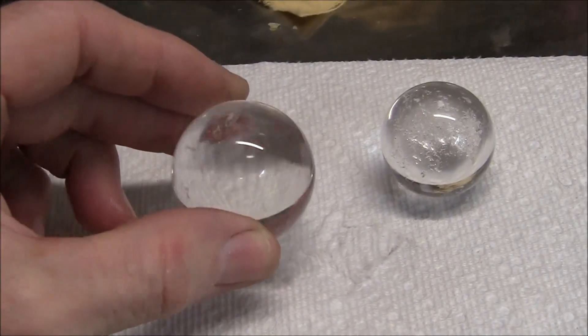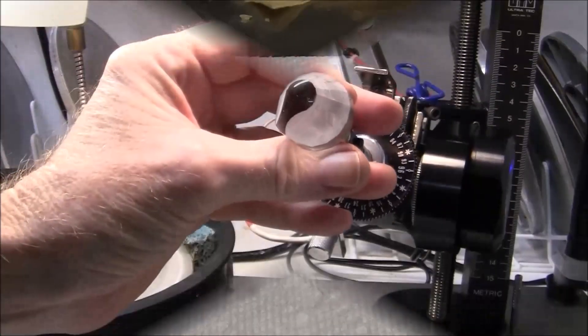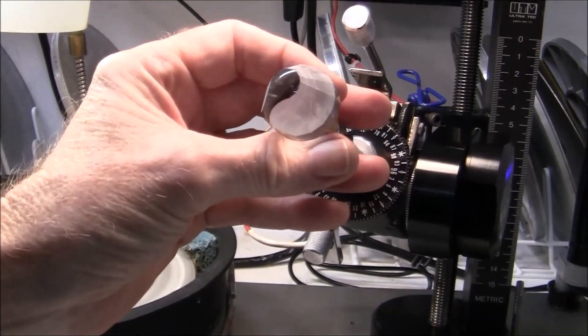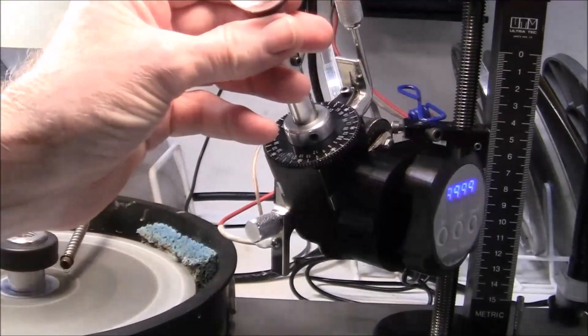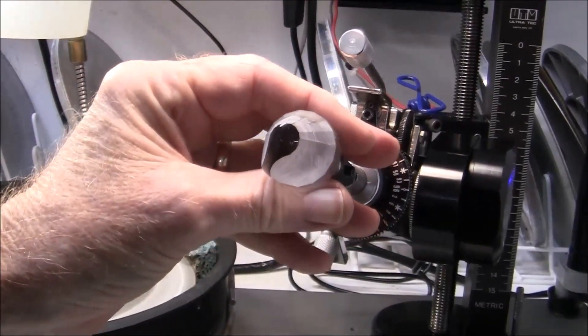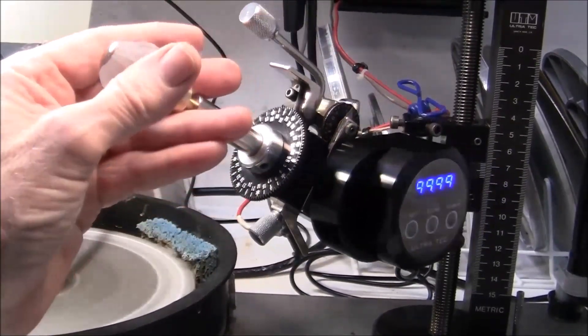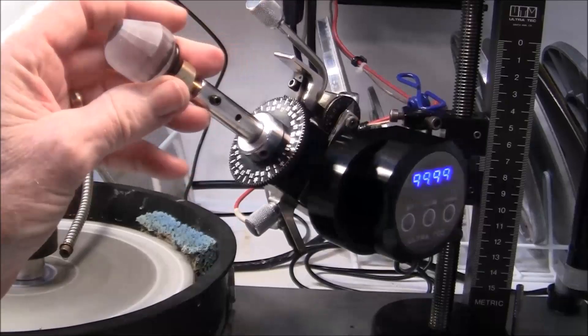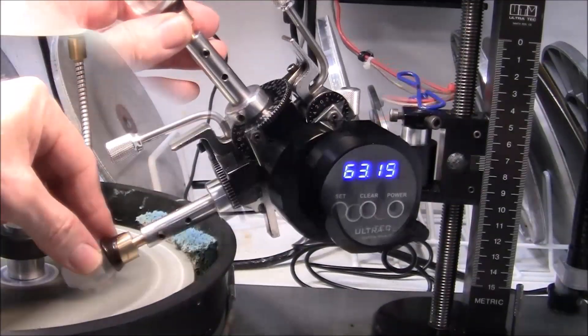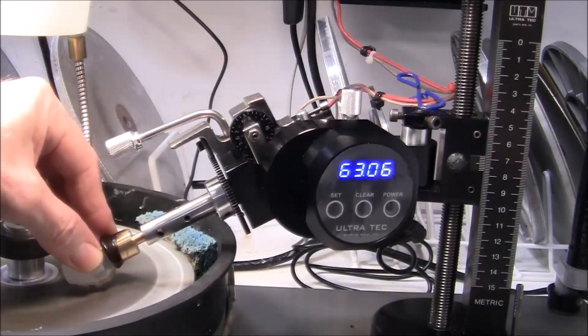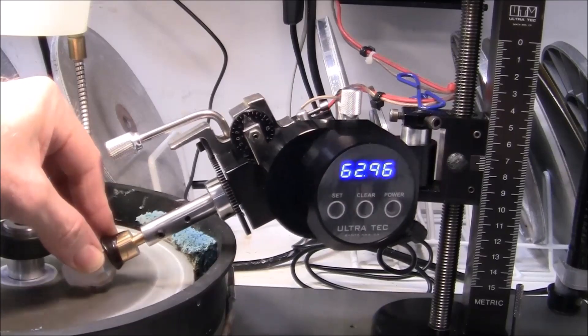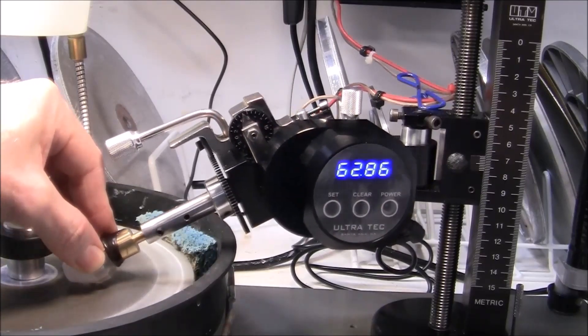So I'll get started on this stone. I've used wax to dop this gemstone. Dopping is putting the stone you're going to cut onto a brass stick. It holds the gem while you're cutting.